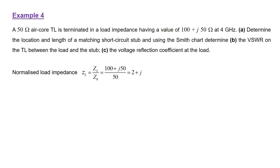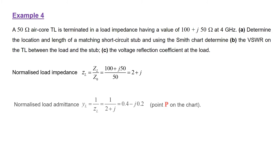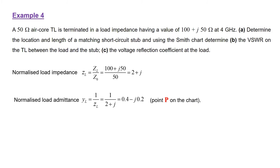Because it's a parallel based matching network, we're better off working in terms of admittance. So the next thing we need to do is determine the normalized load admittance, which is simply the inverse of the normalized load impedance. So little yL equals 1 over zL, which is 1 divided by 2 plus J, giving us 0.4 minus J0.2. We're going to label that normalized load admittance on the chart and call it point P.